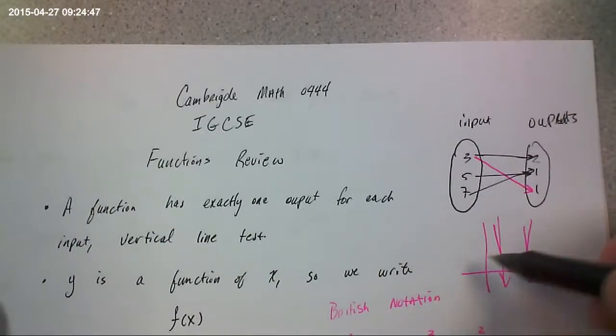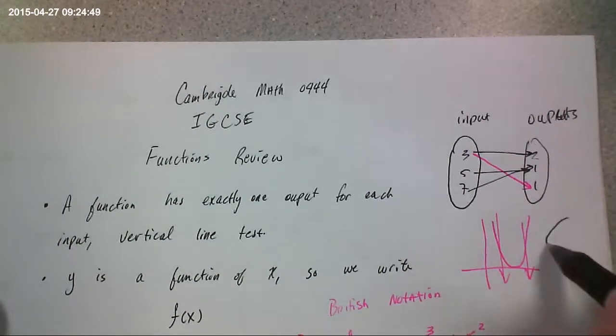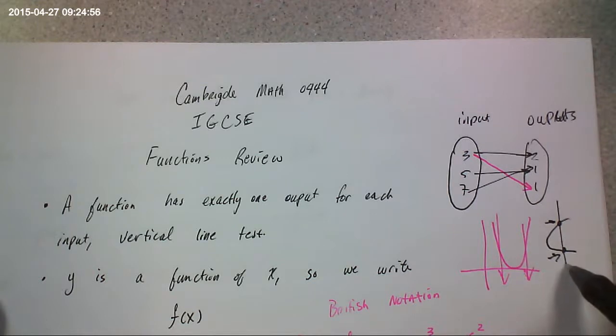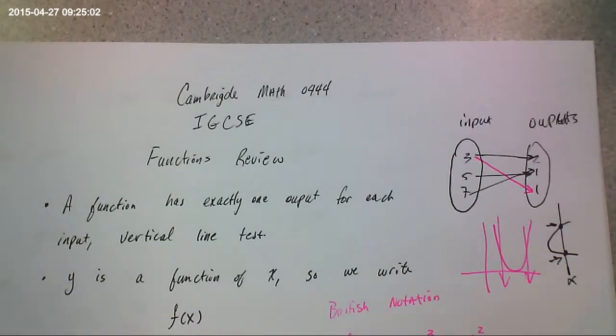The reason that is, is because if you had a graph like this, this would be an output and this would be another output. And this right here, the x, would be the input. Here would be an input that would have more than one output. That would not be a function.